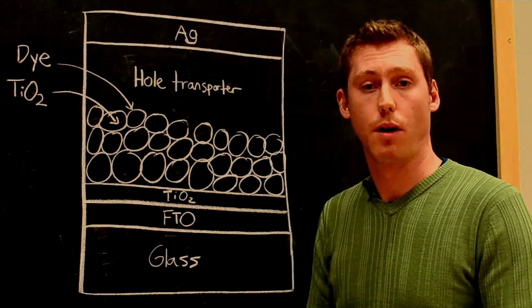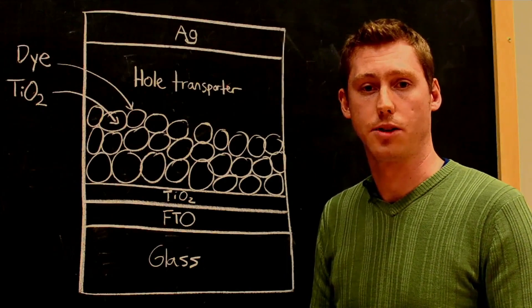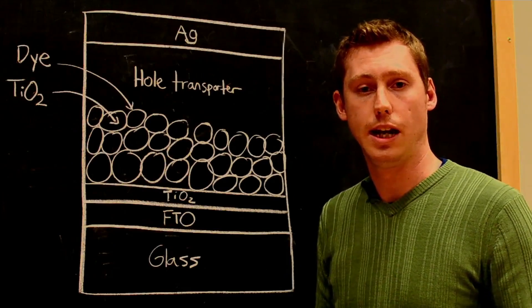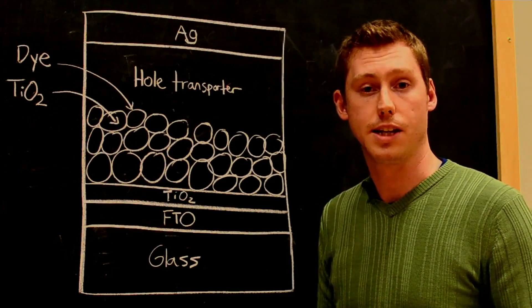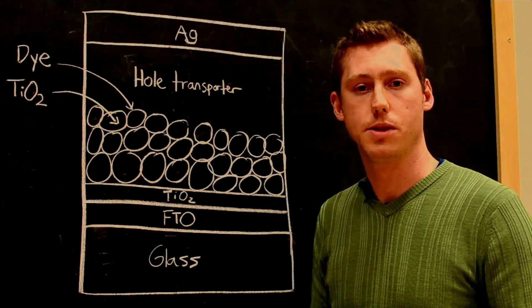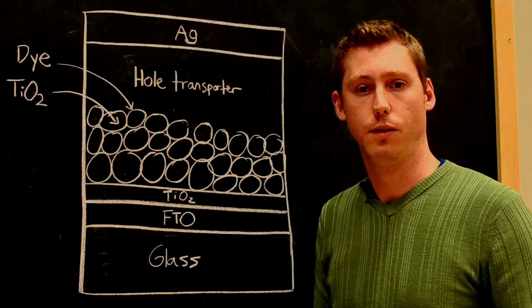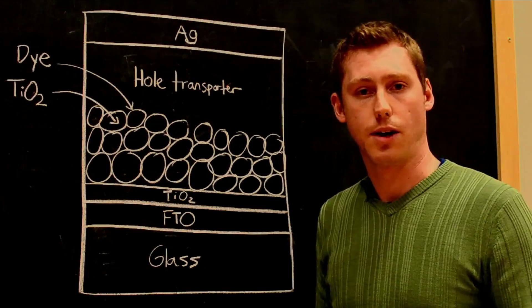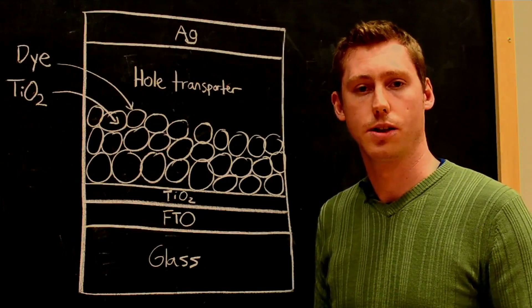However, it turns out the perovskite itself transports charge remarkably well. Our group showed that you could replace the mesoporous titania with an insulating alumina scaffold and achieve efficiencies up to 11%. In particular, the open circuit voltages were dramatically improved to 1.1 volts, despite the low band gap of 1.55 electron volts, demonstrating that this truly is a low-loss system.